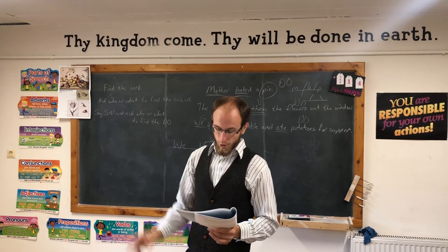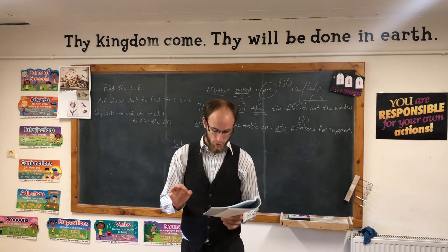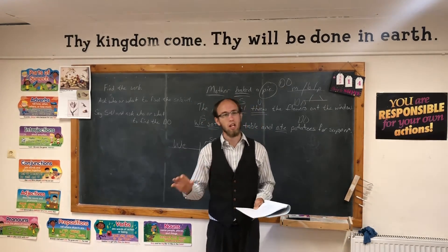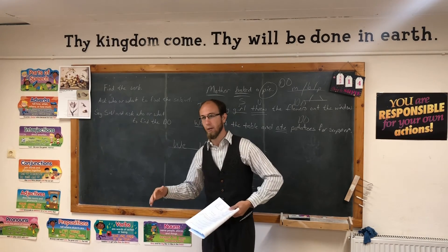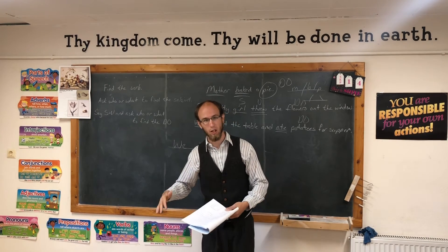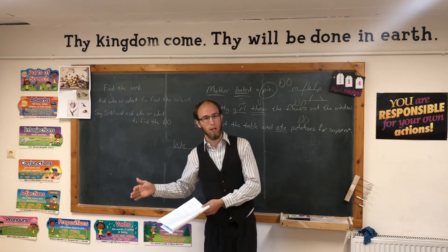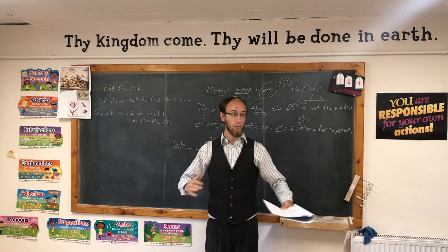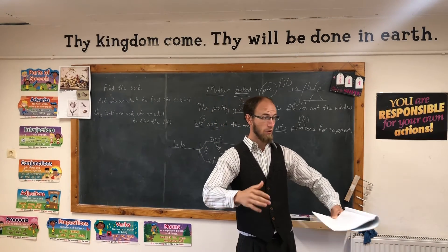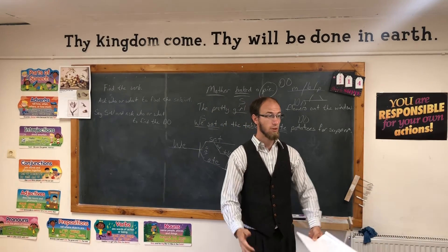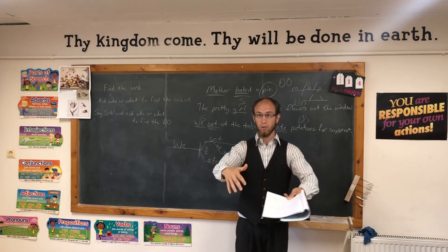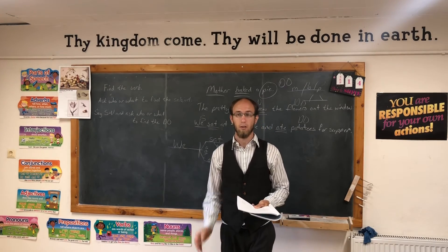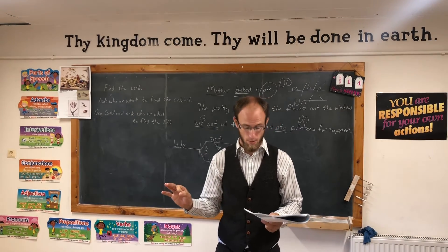Alter and altar. The first — alter with an E — means to change: 'We decided to alter the pattern; we changed it a little bit to fit my little sister.' And then altar with an A means a place where you do a sacrifice — you can put the sacrifice on the altar.